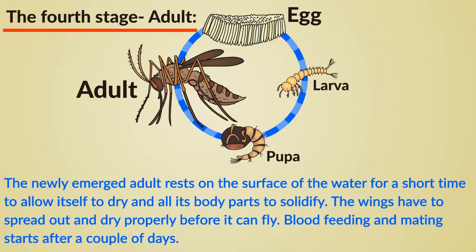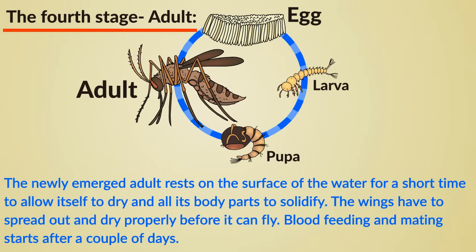The fourth stage: adult. The newly emerged adult rests on the surface of the water for a short time to allow itself to dry and all its body parts to solidify.